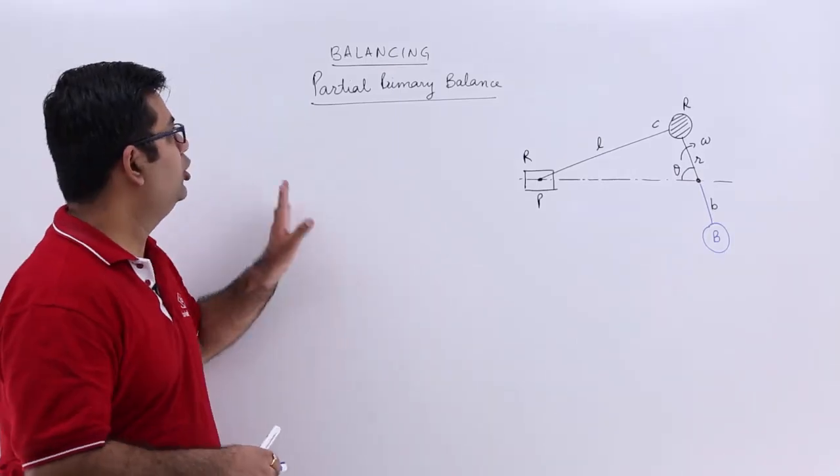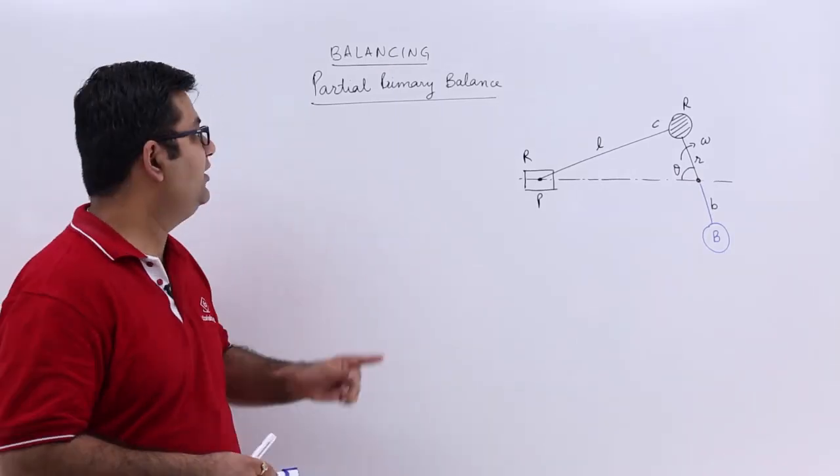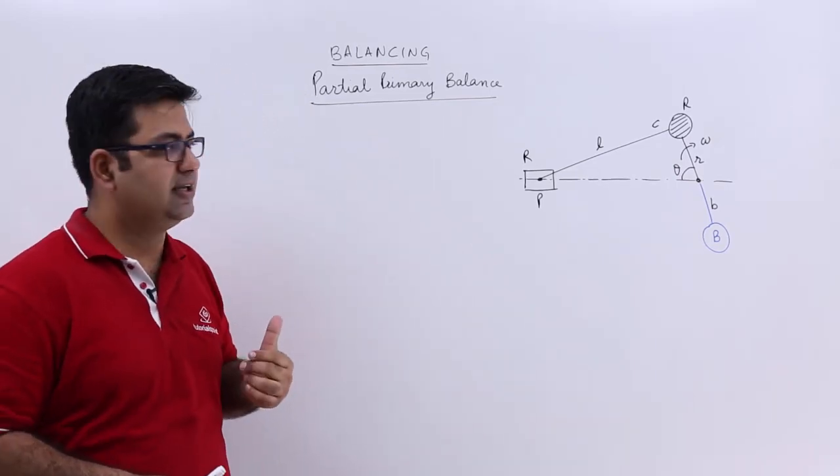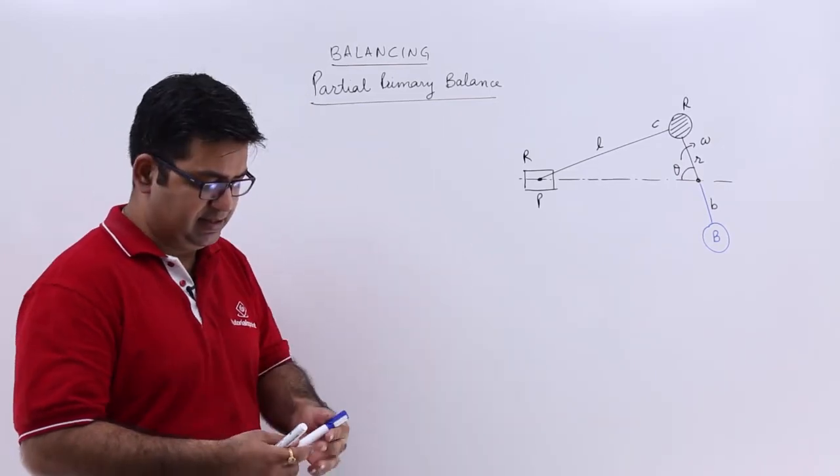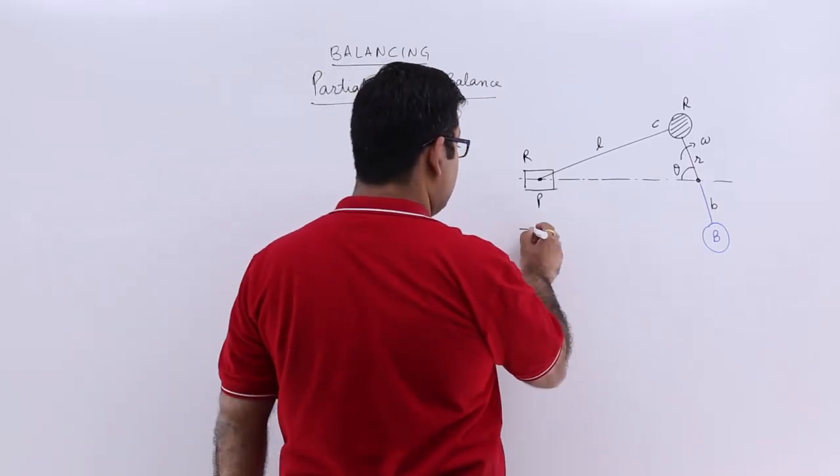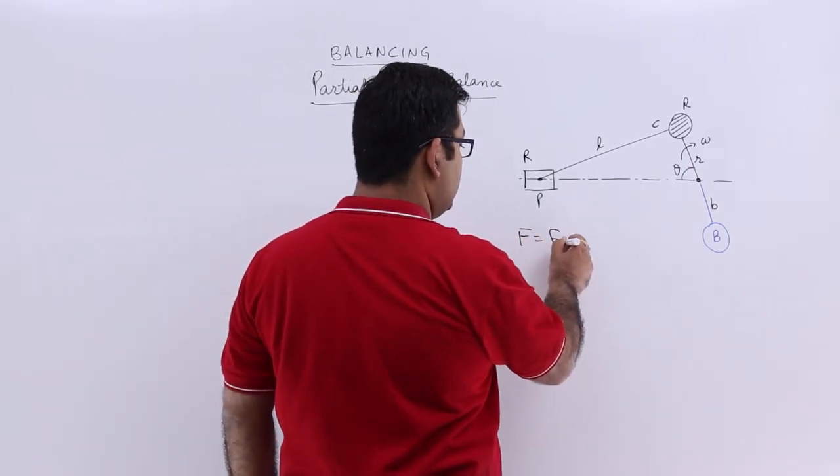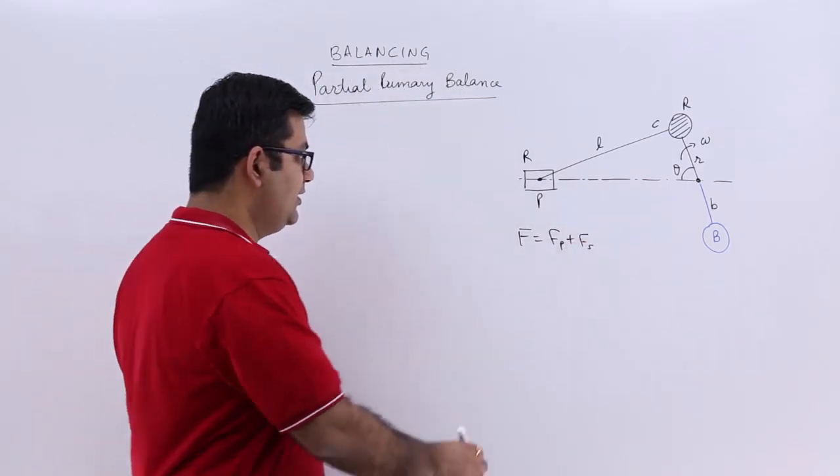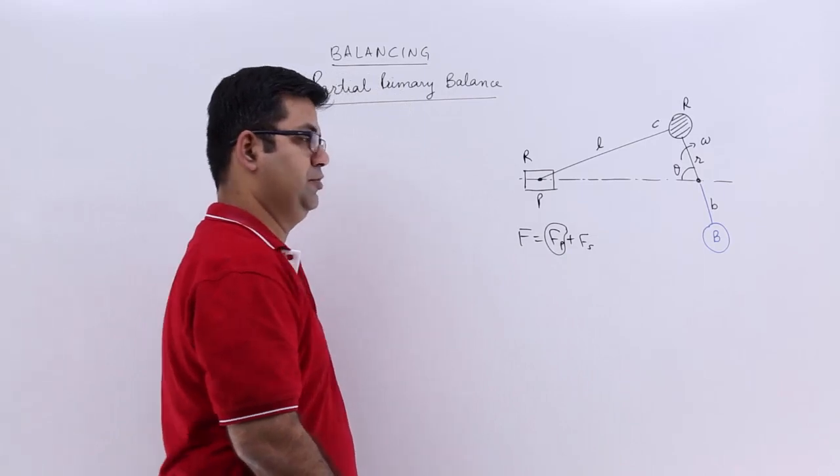Now let us look at the last video on the topic of balancing and talk about partial primary balancing. In the previous video we looked at that the reciprocating mass has two components of the force: the primary force plus the secondary force. In this we will try and balance this primary force.